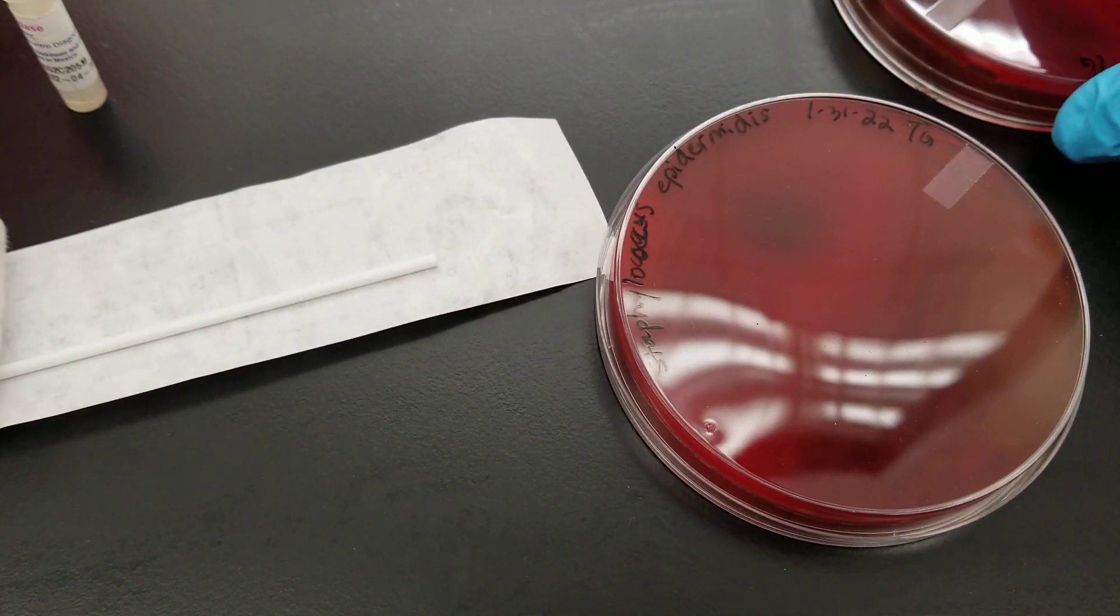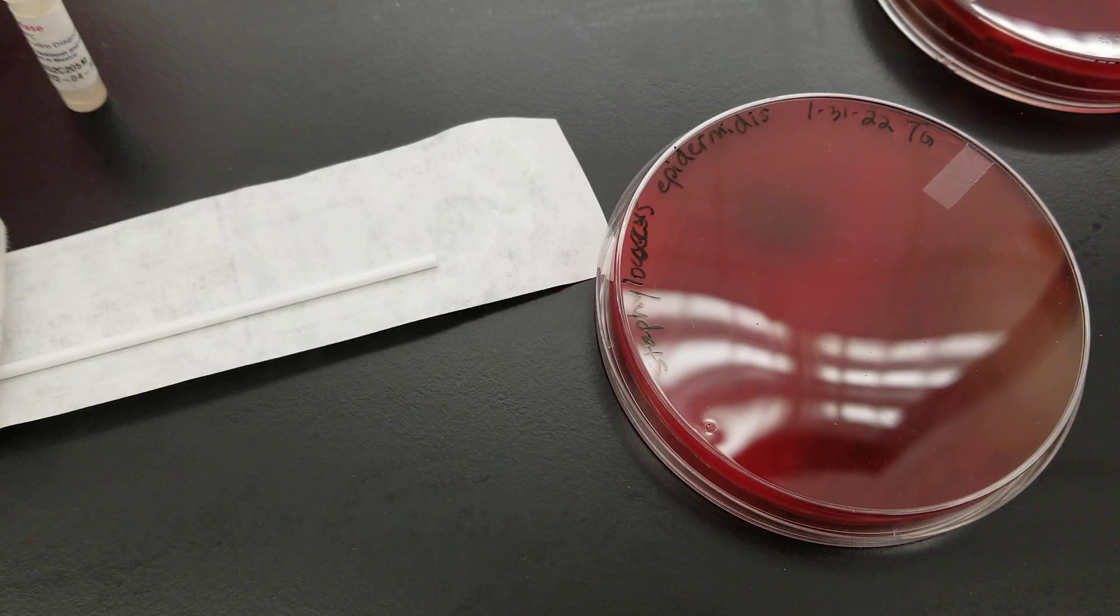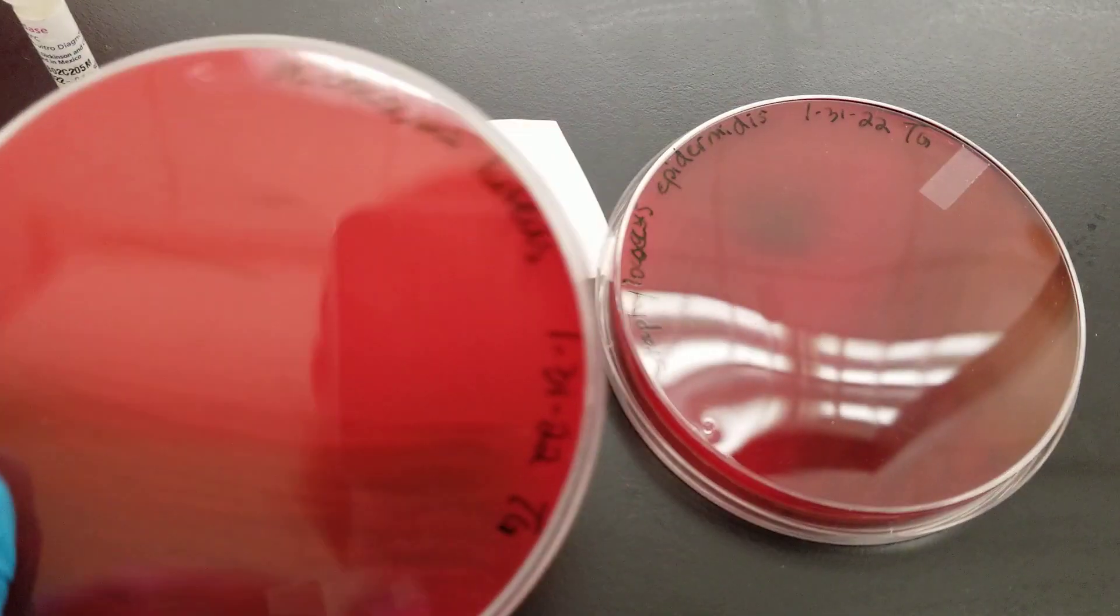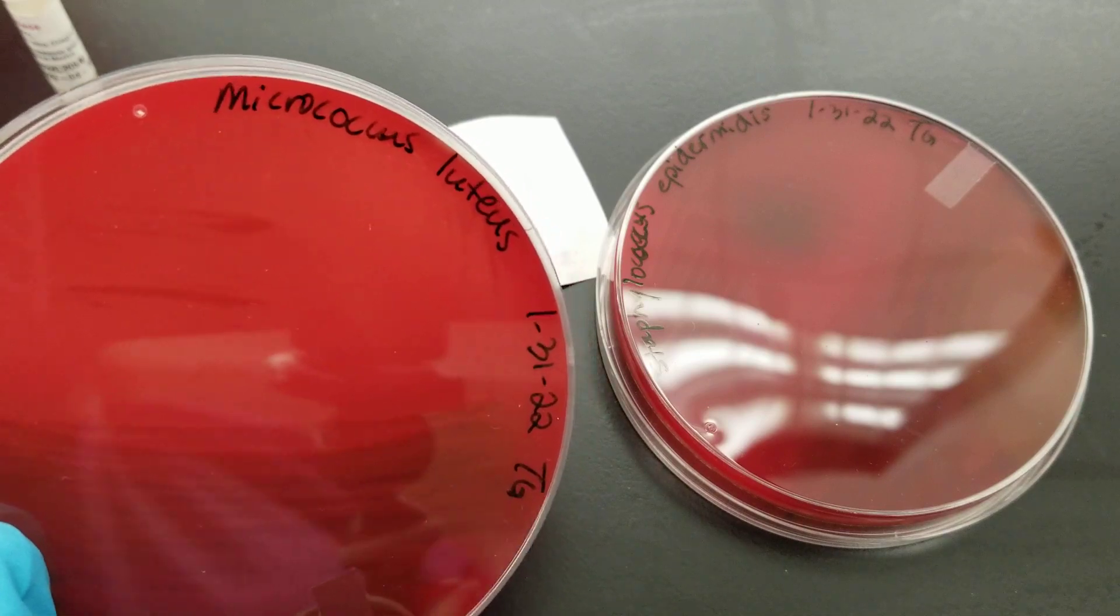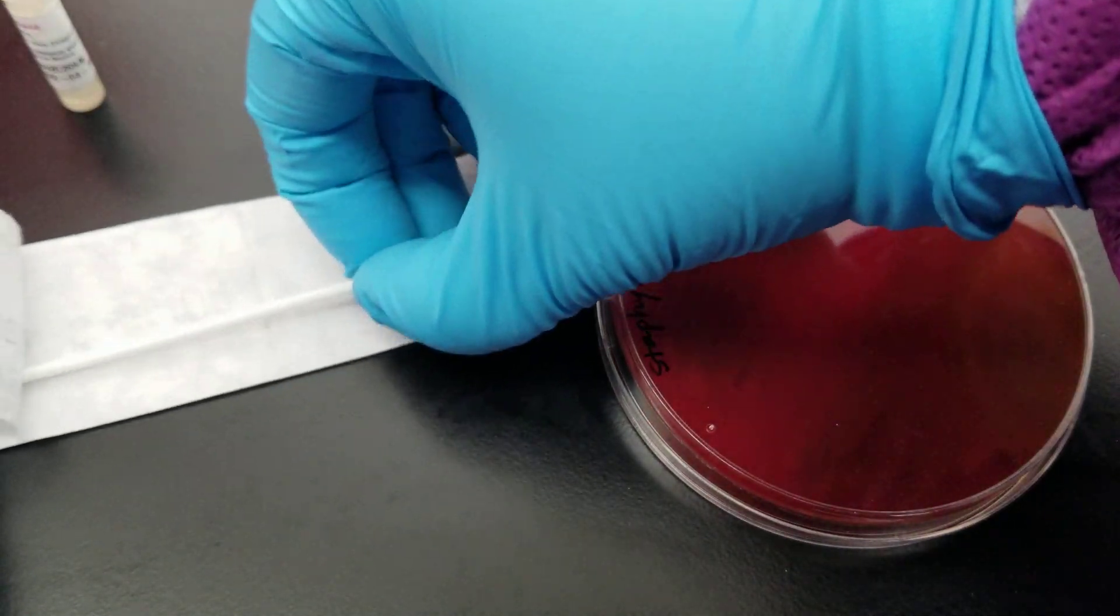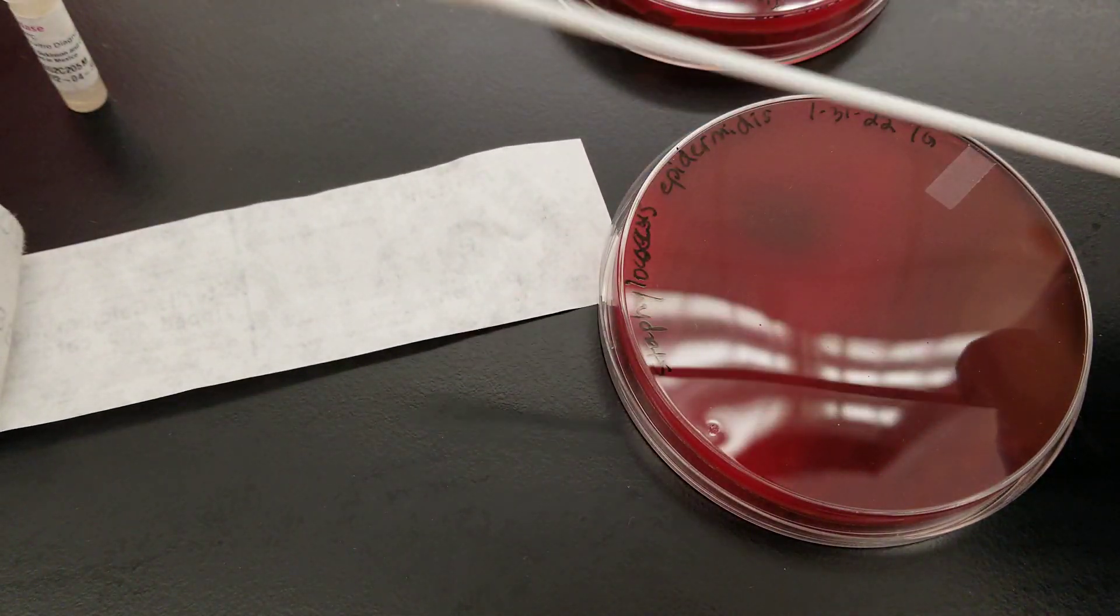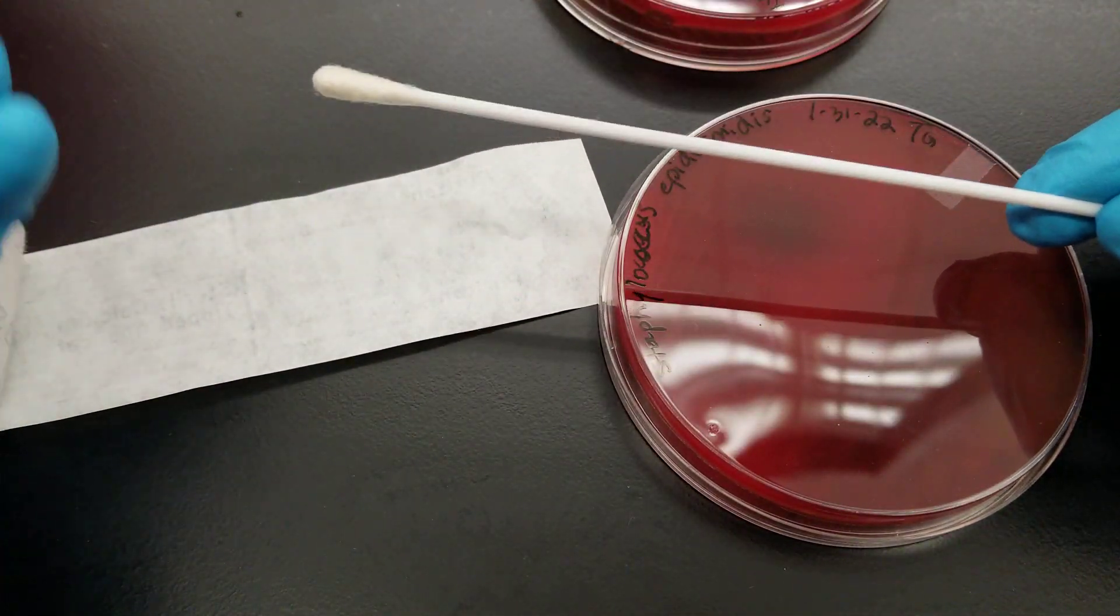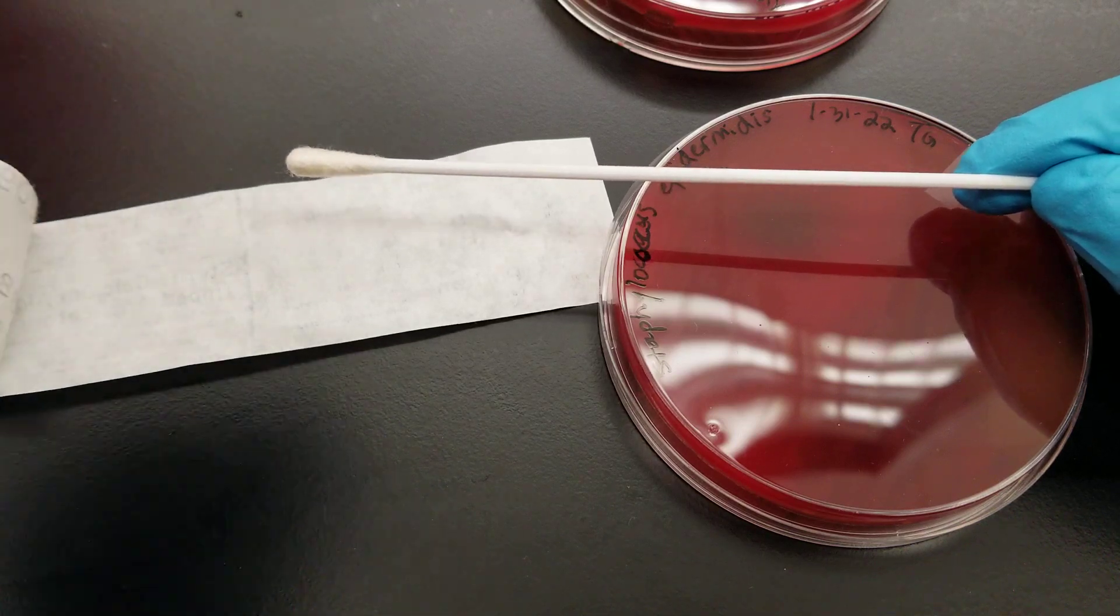This is staphylococcus epidermidis. When we do our testing flow chart, it ends up being between micrococcus luteus and staphylococcus epidermidis, and this is a way to differentiate them. So we'll do this again. We're going to saturate the tip of the swab.